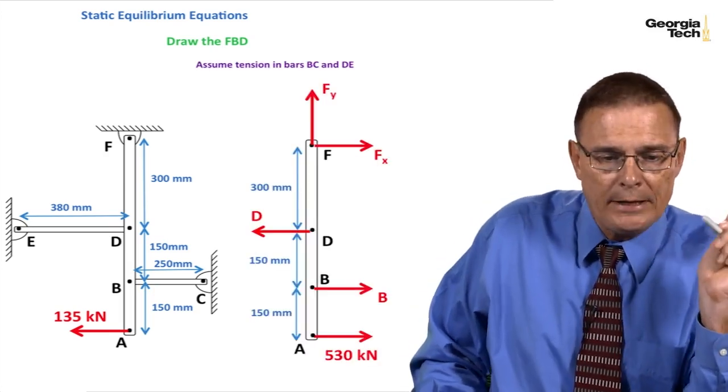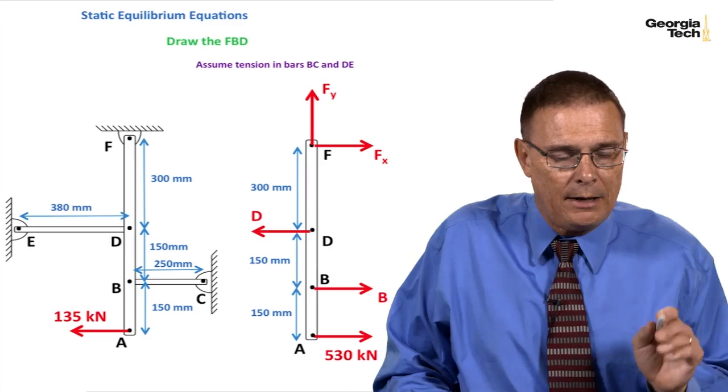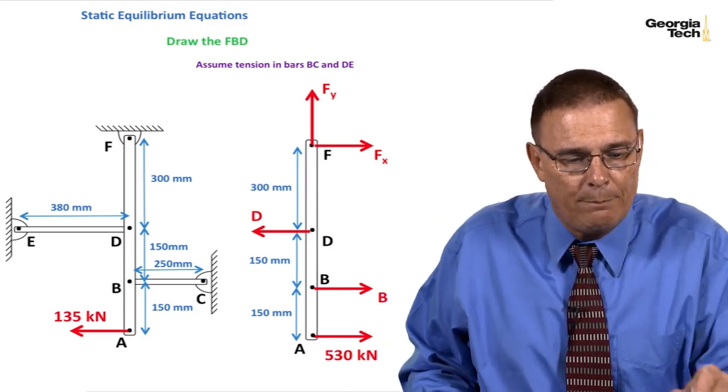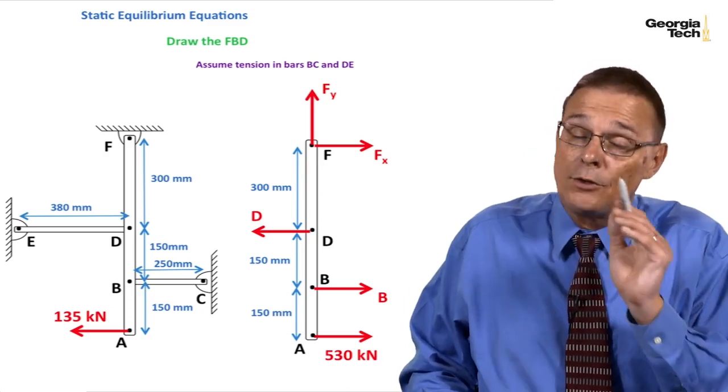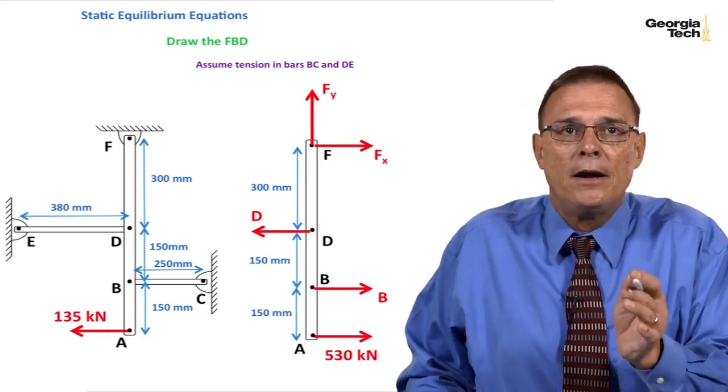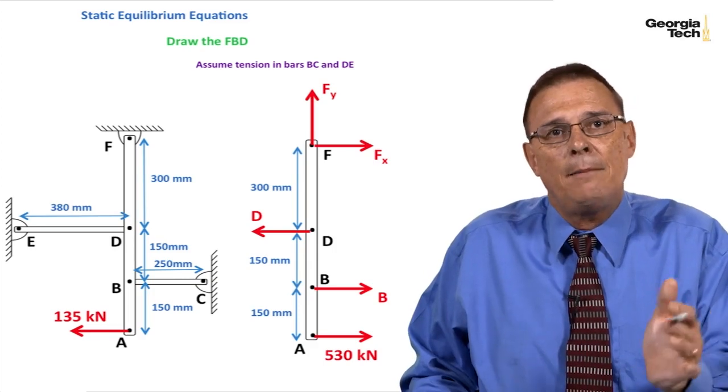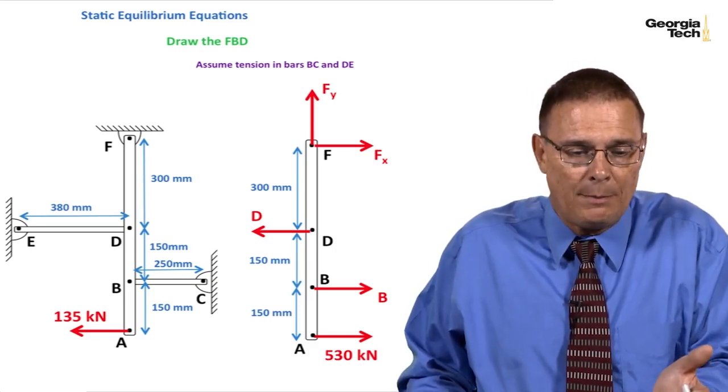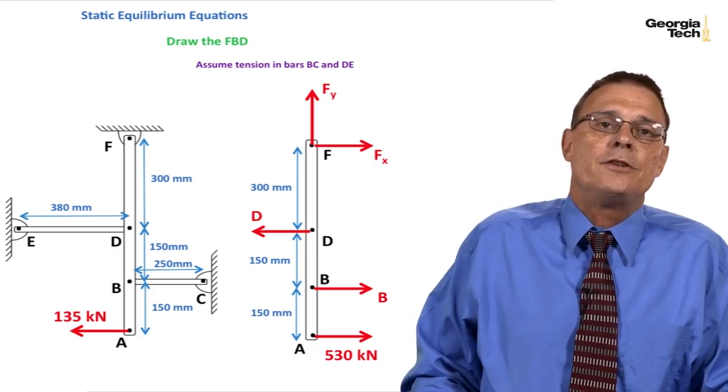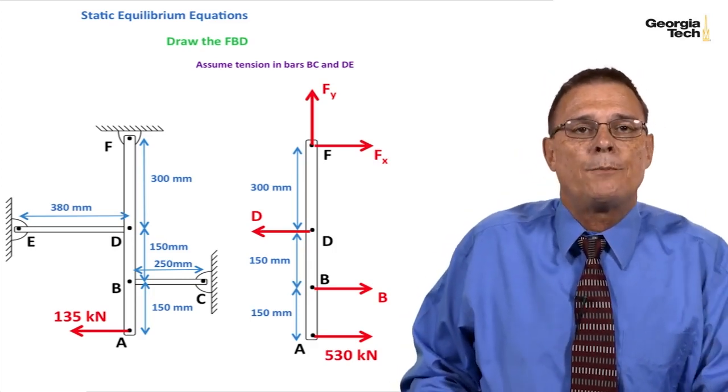Here's the free body diagram. You'll notice I've got to be a little careful here. I've assumed that bars BC and DE are in tension. You have to assume them to be in one or the other. If you're consistent and they come out to be negative in the end, then I'll know they're in compression instead of tension.